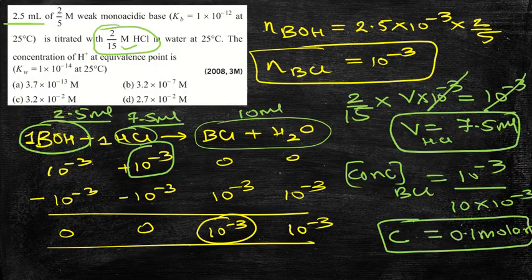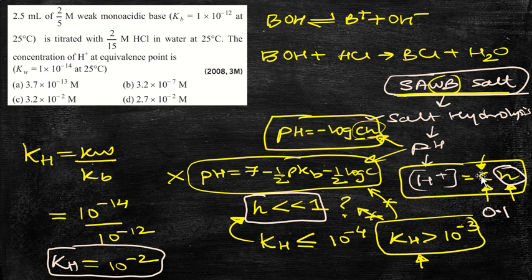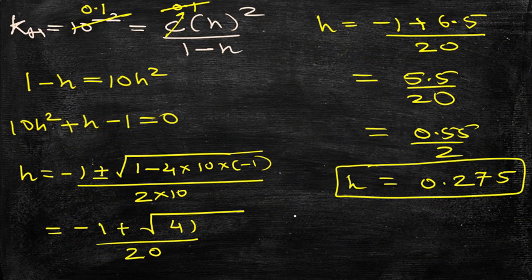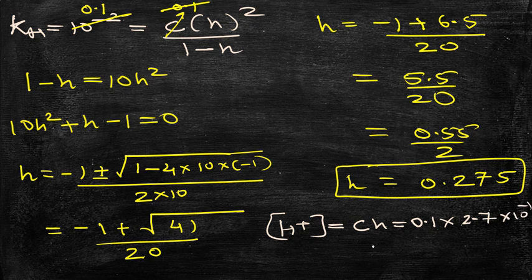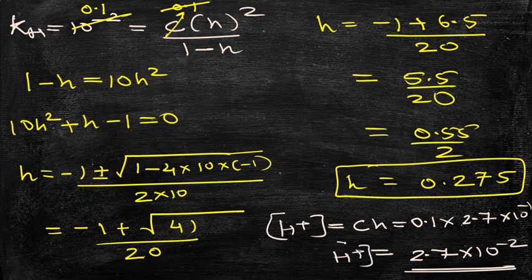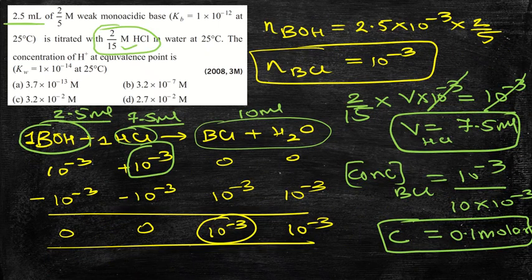Now we have both h ≈ 0.275 and C = 0.1. The H⁺ ion concentration is C × h = 0.1 × 0.275 ≈ 0.1 × 2.7 × 10⁻¹ = 2.7 × 10⁻² mol/L. This is the H⁺ concentration at the equivalence point, which corresponds to option D.